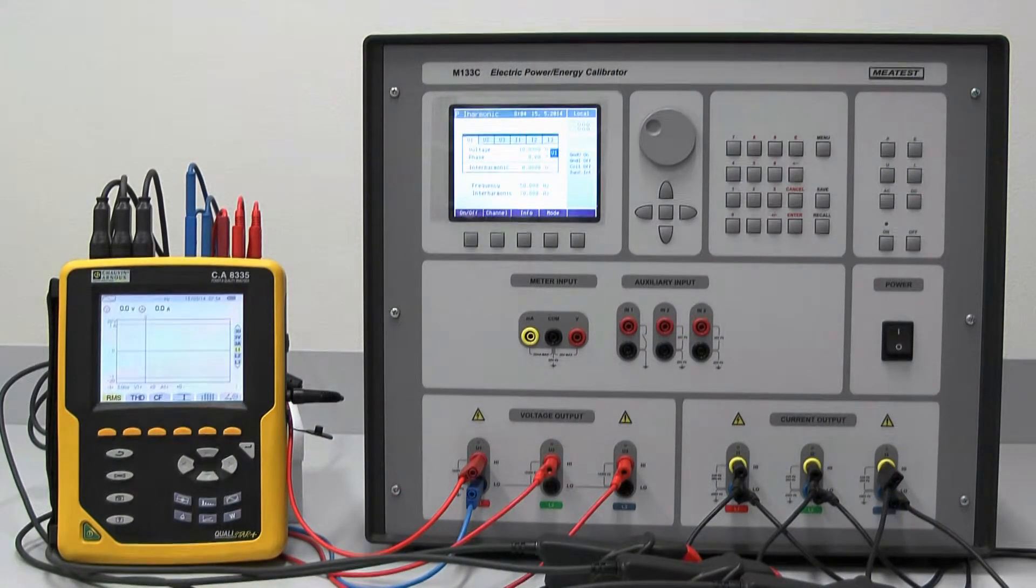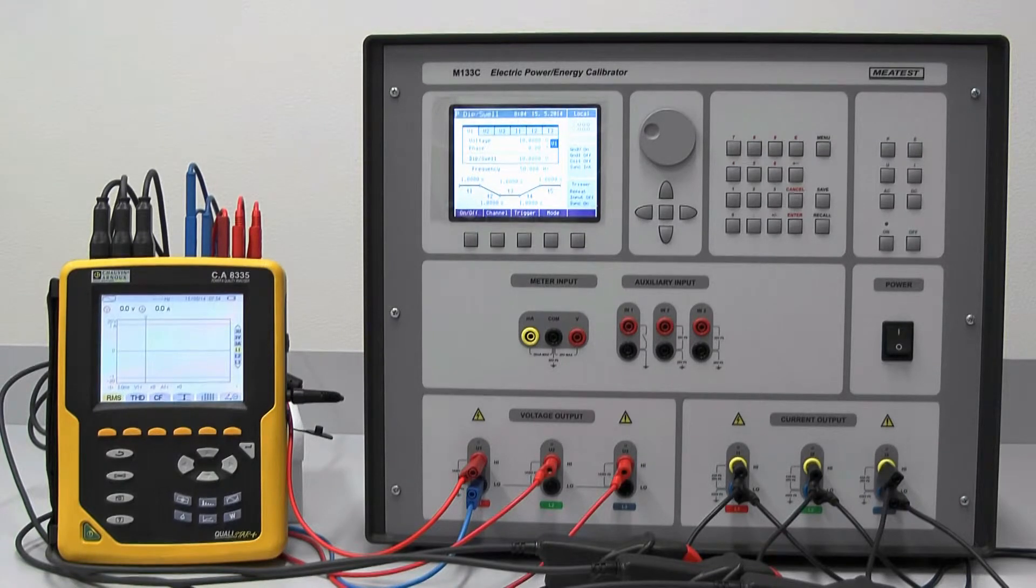Similarly, the interharmonic mode generates independent distortion up to 5 kilohertz, and dip swell mode lets you set timed signal fade-ins and fade-outs.